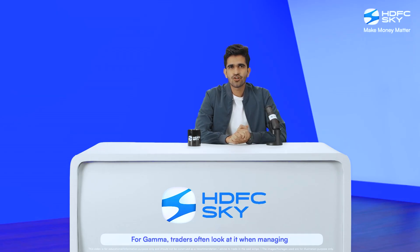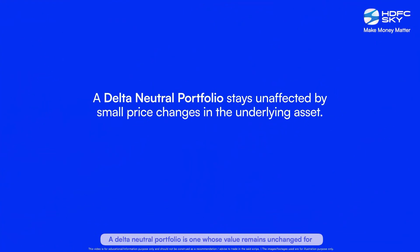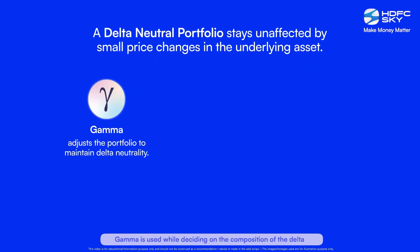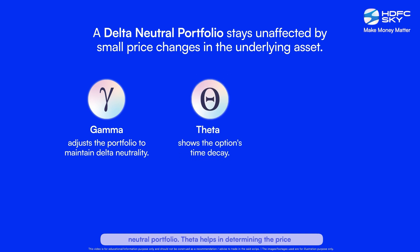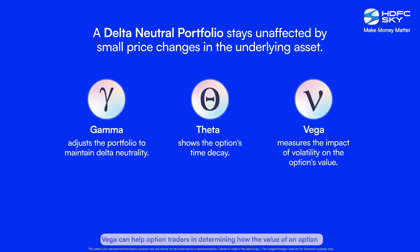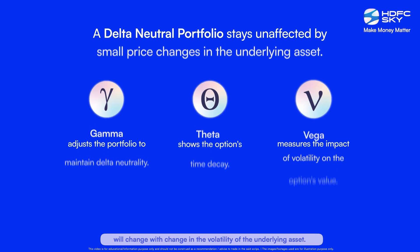For Gamma, traders often look at it when managing delta-neutral portfolios — portfolios whose value remains unchanged for small changes in the underlying asset. Gamma is used when deciding on the composition of a delta-neutral portfolio. Theta helps in determining the price or value of an option at any given time. Vega can help option traders determine how the value of an option will change with changes in the volatility of the underlying asset.